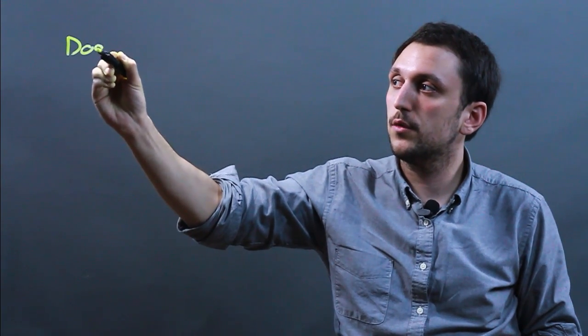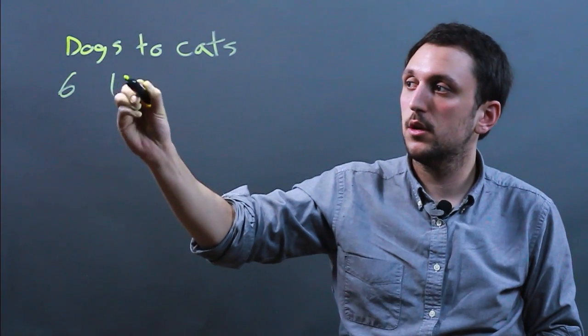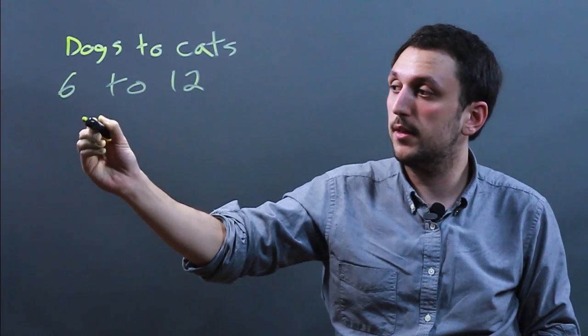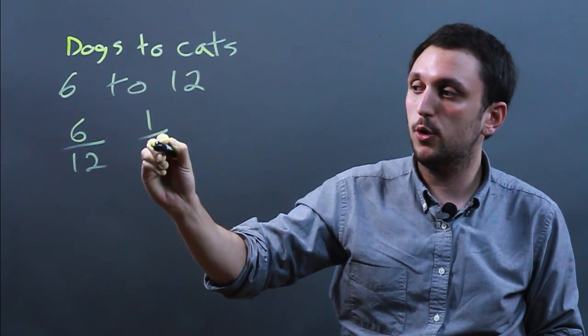When you have a proportion, for example, let's say the proportion of dogs to cats is always proportional and it's 6 to 12. You can simplify that. So you say 6 over 12 is the same thing as 1 over 2.